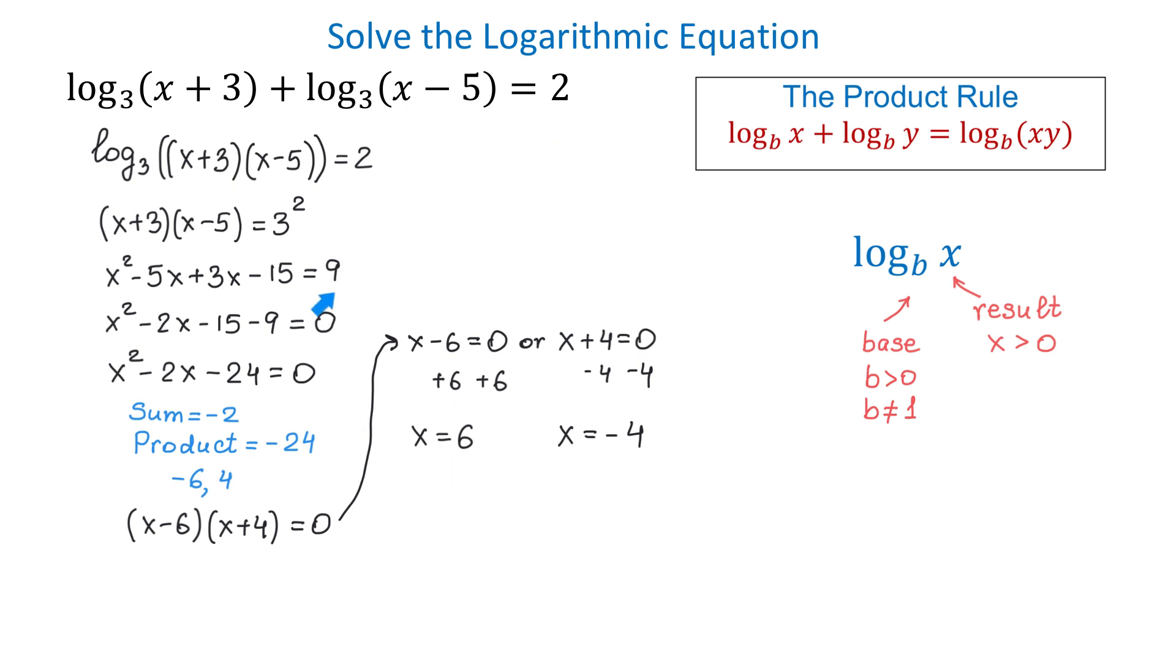If we replace 6 in the initial equation, then in the first logarithm, 6 plus 3 is 9, and that is a positive number, and 6 minus 5 is 1, and this is also a positive number. However, if we replace negative 4, then in the first logarithm, negative 4 plus 3 is negative 1, and negative 4 minus 5 is negative 9. So, if at least under one of these logarithms we get a negative number, then we must exclude negative 4 from the solution.